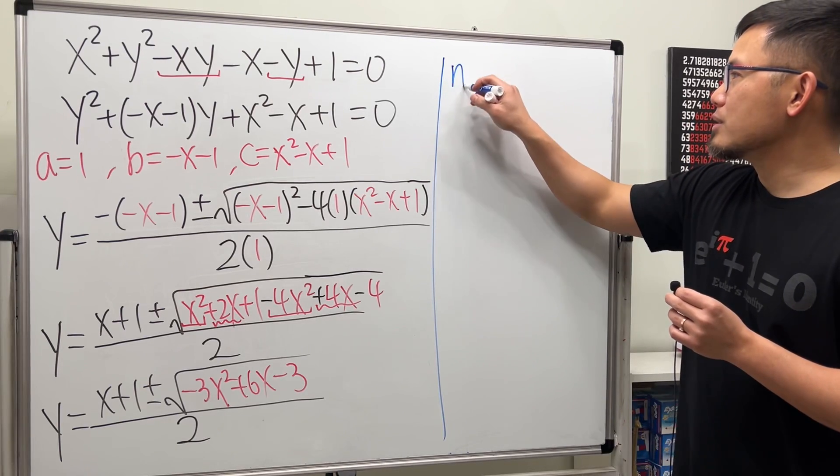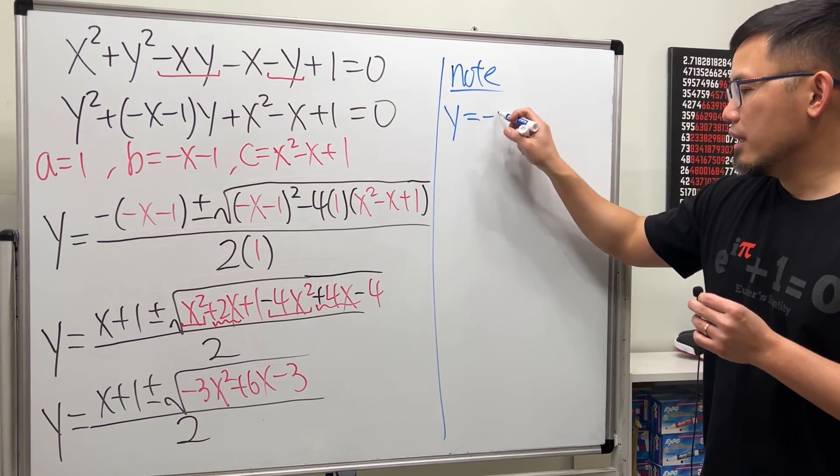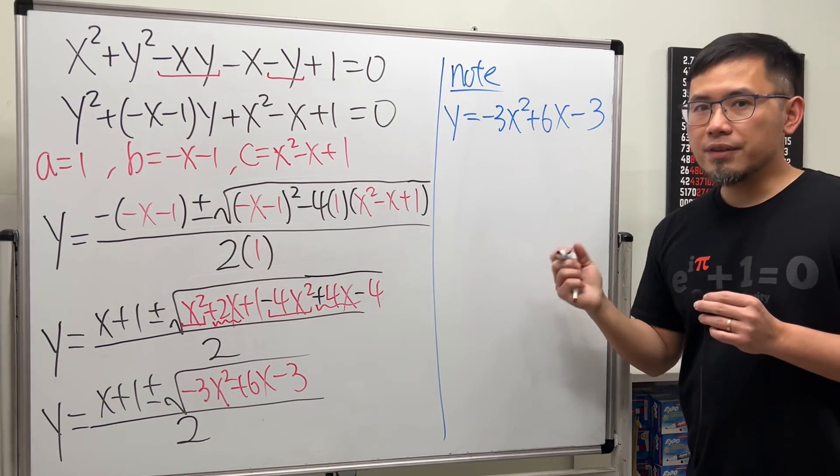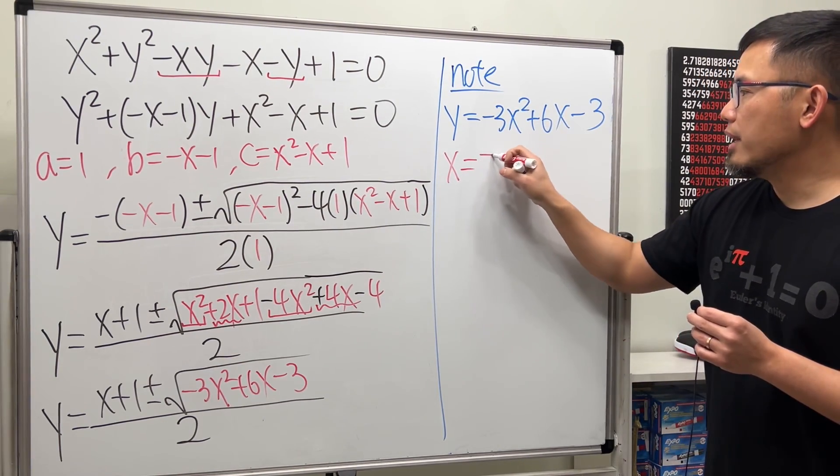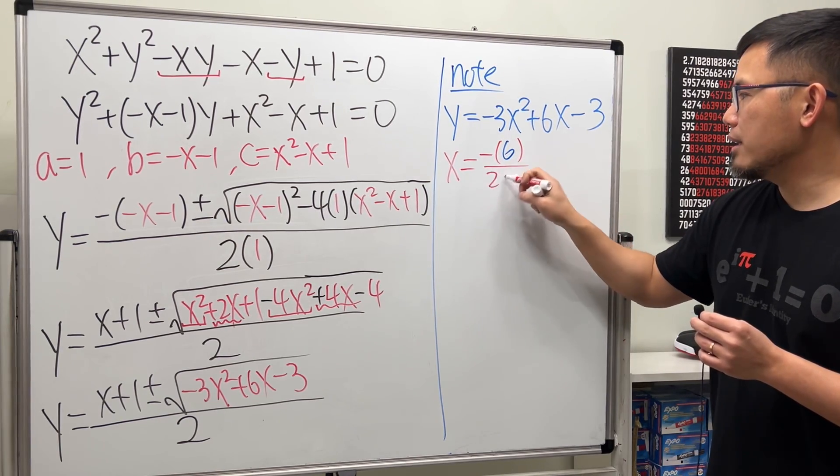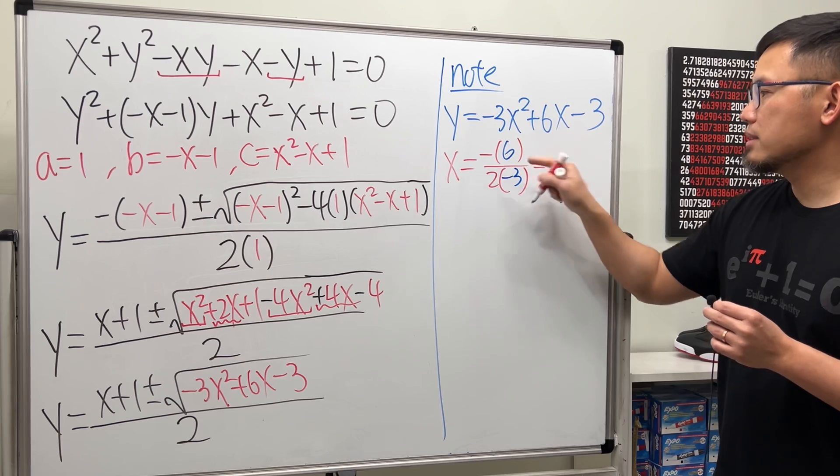Let me just put down: note, if we focus on graphing negative 3x squared plus 6x minus three, let's find the vertex first by using the vertex formula. X equals negative b, which is six, over 2a, a is negative three.